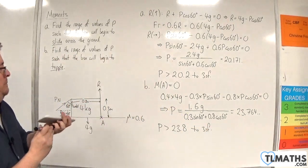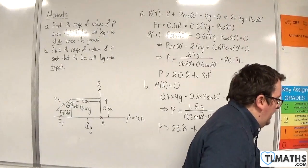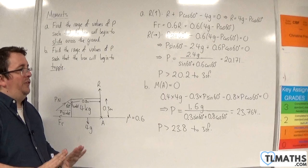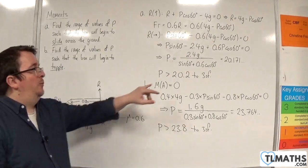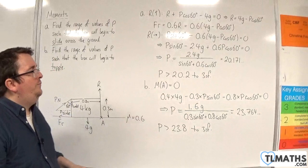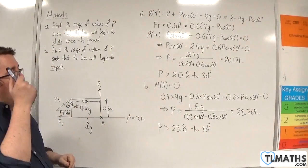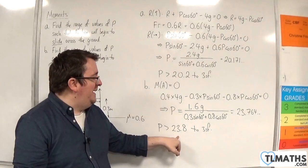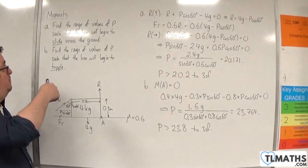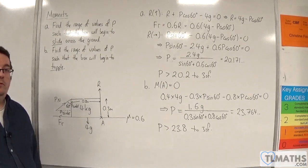So what this tells us is that as P is increased, the box will start sliding when P gets past 20.2 Newtons. Then it's sliding, but once P gets past 23.8 Newtons, the box will start to topple as well.